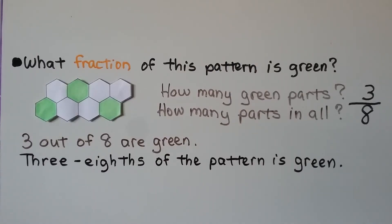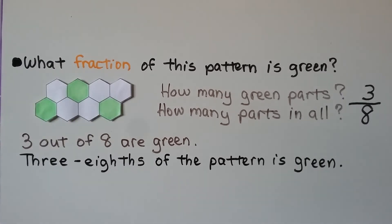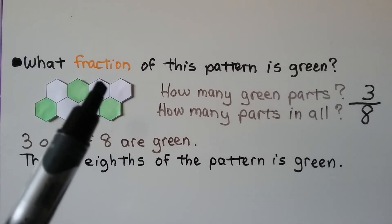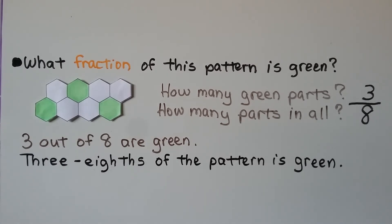What fraction of this pattern is green? We look at how many green parts there are: one, two, three. Three — that's our numerator. Then we see how many parts there are in all: one, two, three, four, five, six, seven, eight. Three out of eight are green. That means three-eighths of the pattern is green.